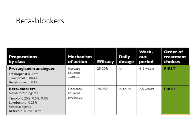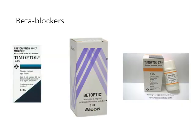Beta blockers are the next line in treatment and also a first choice, though they were previously the primary first-line agents. They've been in use for more than 30 years. Beta blockers reduce aqueous production with about 20 to 25 percent efficacy, used once or twice daily. They are less effective if the patient is also on a systemic beta blocker, and they can lose their therapeutic effect over time.